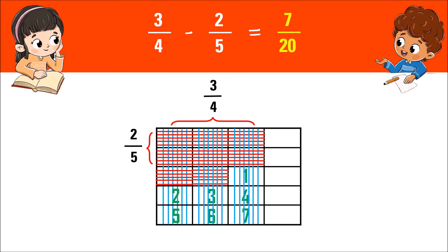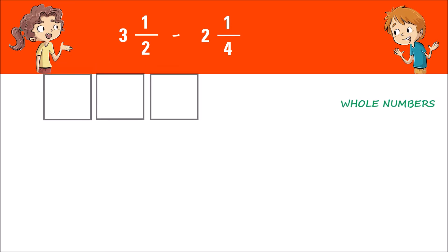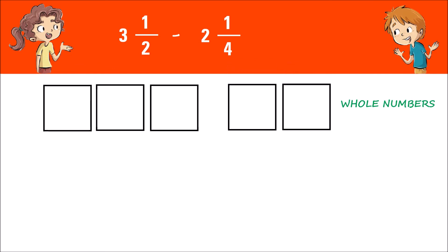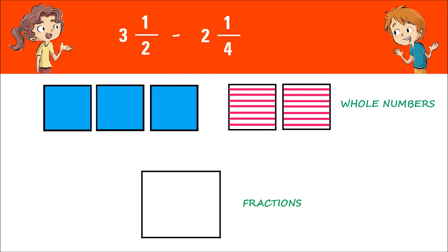This time let's subtract mixed numbers using the grid method: three and one half minus two and one fourth. For the whole numbers, draw three whole boxes for three and one half and two whole boxes for two and one fourth. Shade them with the color blue and pink horizontal lines. Next, for fractions one half and one fourth, make two columns and four rows.